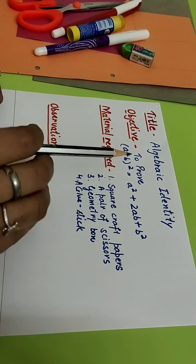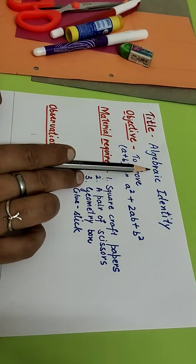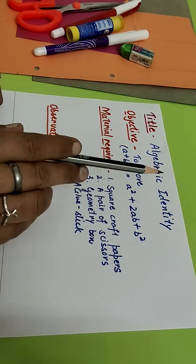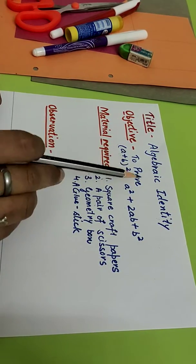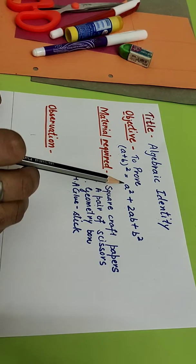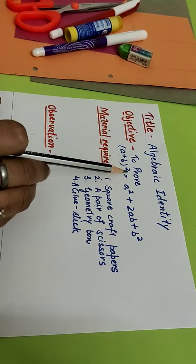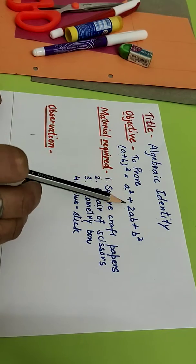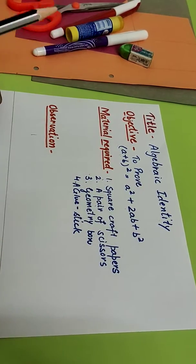Hello students, today we are going to do an activity of maths on the topic algebraic identity. In this we are going to prove an identity which is really very important and it is your first identity that is a plus b whole square is equals to a square plus 2ab plus b square.